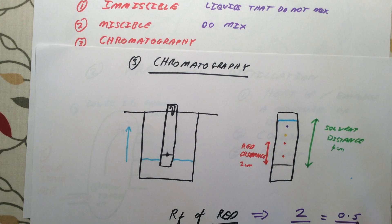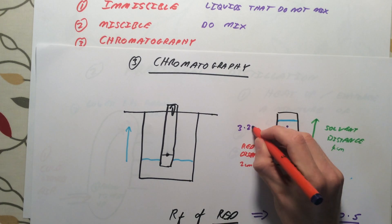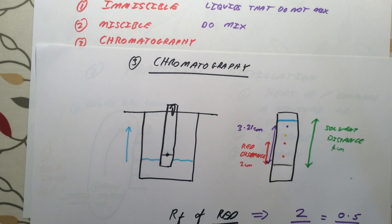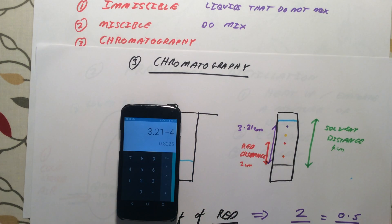This tells us that the red ink will travel at half the distance that the solvent travels, and this will always be true for that particular chemical or that particular colour of ink. If we wanted to do purple now, so let's say retention factor of purple. And this time I am going to say that the purple distance from the pencil line to the purple is 3.21 centimetres, so a bit of a trickier number. However, the idea is exactly the same. The purple ink has travelled 3.21 centimetres. The solvent, the water, has travelled 4 centimetres still. So my retention factor calculation is just 3.21 divided by 4, which is going to give me an answer of 0.8025.